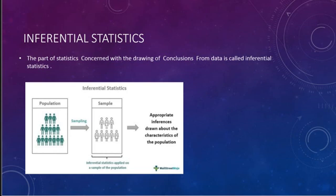Suppose you want to check the literacy level in a state. Taking the population into consideration and collecting data, you take out the literate persons — that subset is called the sample. A sample is a part taken from a big population. In inferential statistics, from the population you take a sample, draw inferences on that sample, and then apply those conclusions back to the population. That is called inferential statistics.